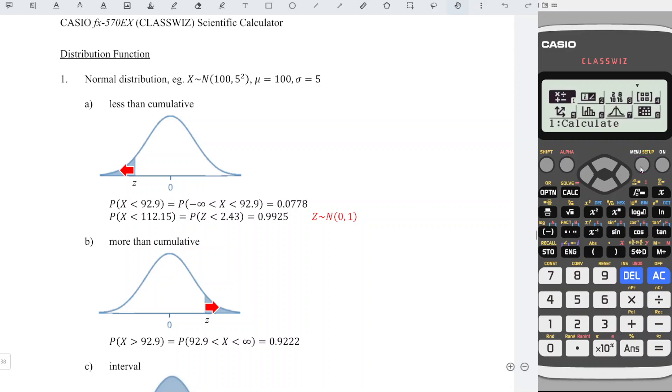We can first press menu, look for the 7 function distribution, choose 2 normal CD (cumulative distribution). Lower limit: since it's negative infinity, we can input a very small value, for example negative followed by as many nines as possible. For accurate answer purposes, press equal. Upper limit: 92.9. Press equal.